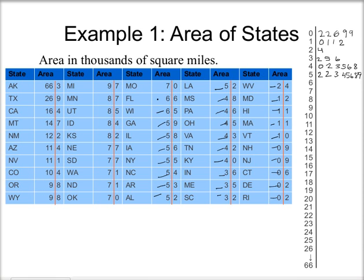For 6, I've only got a couple — a 5 and a 6. For 7, I've got a 0, another 0, a couple of 1s, and a couple of 7s. Then for 8, I've got a 2, a 4, a 5, and a 7. For 9, I've got a 7 and a couple of 8s.